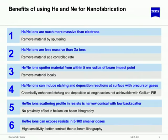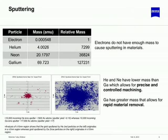Helium and neon can also be used for exposing resist, similar to electrons. The benefit, however, is that with helium and neon you don't suffer from a proximity effect as you do with electron beam lithography. Moreover, the sensitivity of the resist to ion beams is far greater than for electron beams.